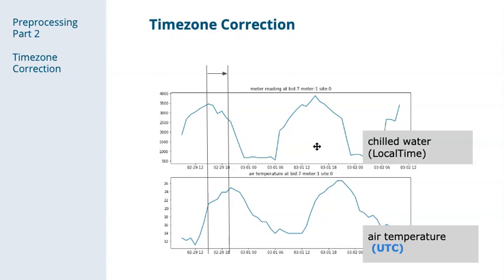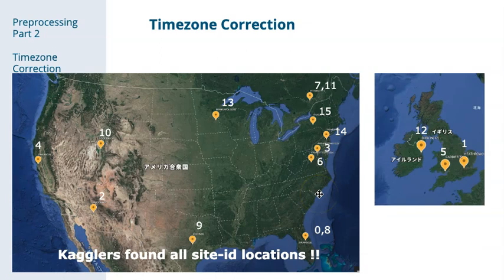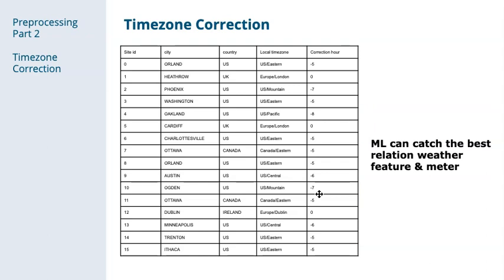Another type of pre-processing that we used was time zone correction. We and some of the other competitors noticed that the time zone of the meter readings were probably not the same as the time zone of the weather data. Some of the other competitors did some detective work and determined the location of the different sites. From location, we were able to determine time zone and then shift the timestamps, which made the data better aligned and improved our model's predictions.